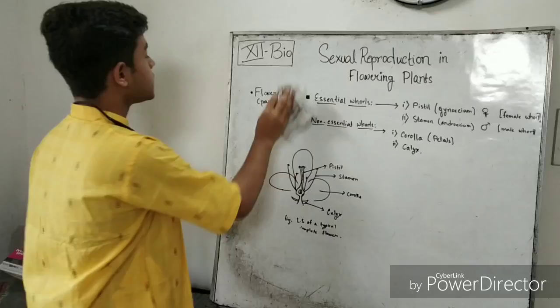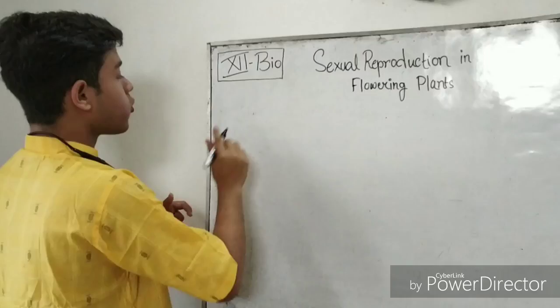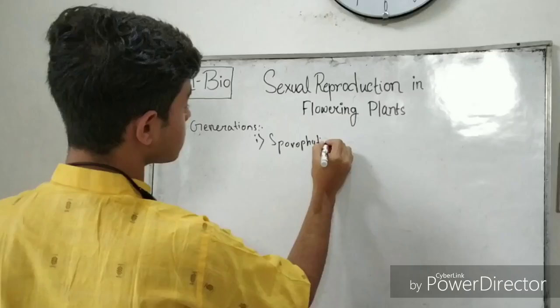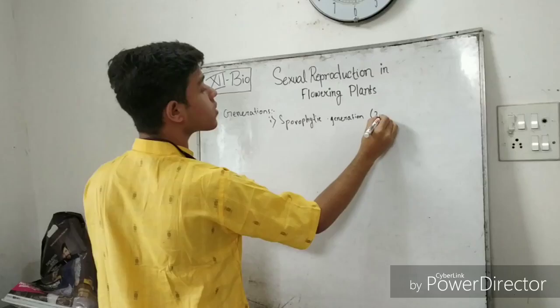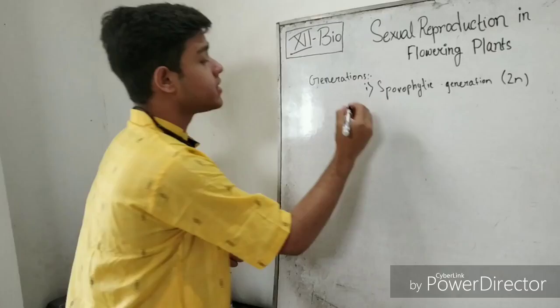Next we will be talking about the two generations that are present in a flowering plant. The first is the sporophytic generation. The sporophytic generation is the diploid generation — it bears bodies that produce spores. Spores are the link between the sporophytic generation and the next gametophytic generation.